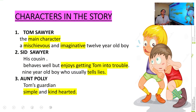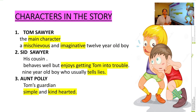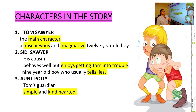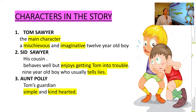Now before we start off, let's deal with something that we already studied in the previous class — the characters that we saw in the story. In our previous class we saw the slide where we had all the characters. We have three characters in the story: Tom Sawyer, Sid Sawyer, and Aunt Polly.